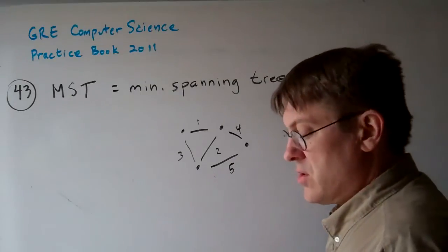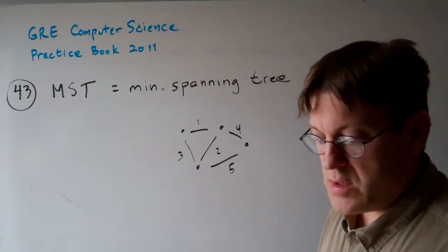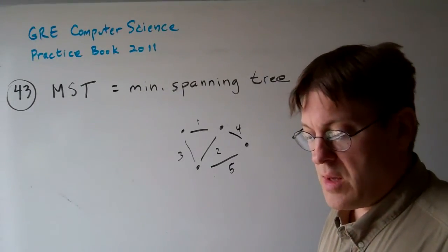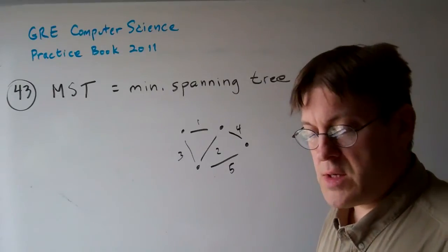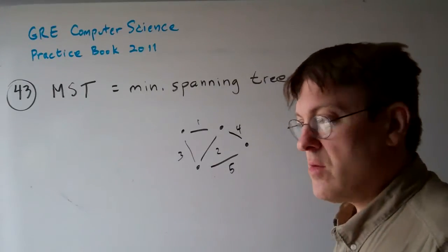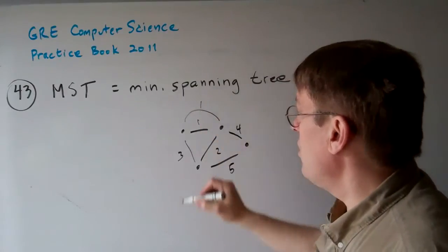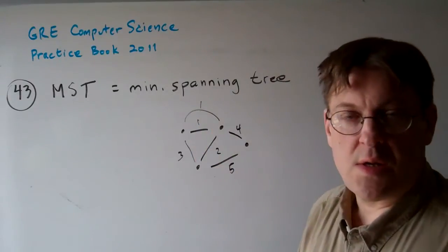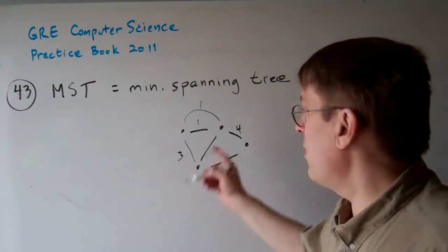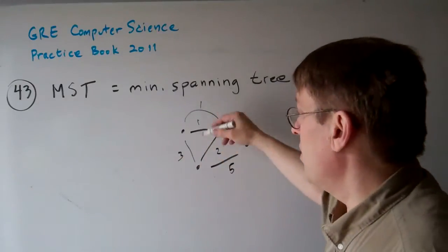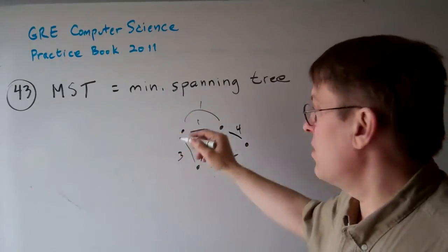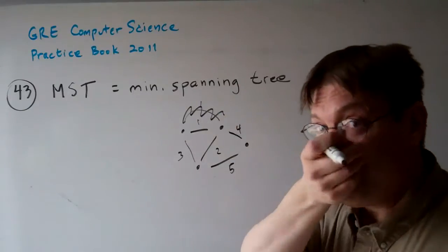Now the second shortest edge, it doesn't say this in the question. It says a connected graph with three edges. It doesn't say if it's directed, undirected, or whatever. But you can sometimes have two edges that are the same, going from one to the other. And so you might argue that one of these is the second shortest. But we're going to forget that possibility.